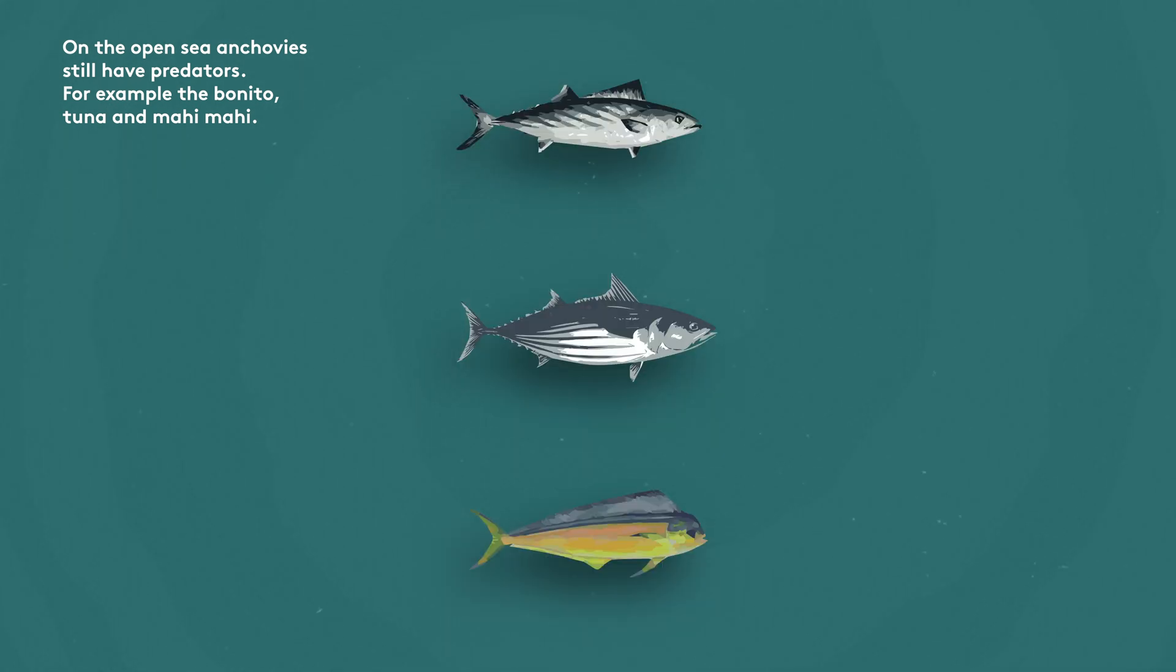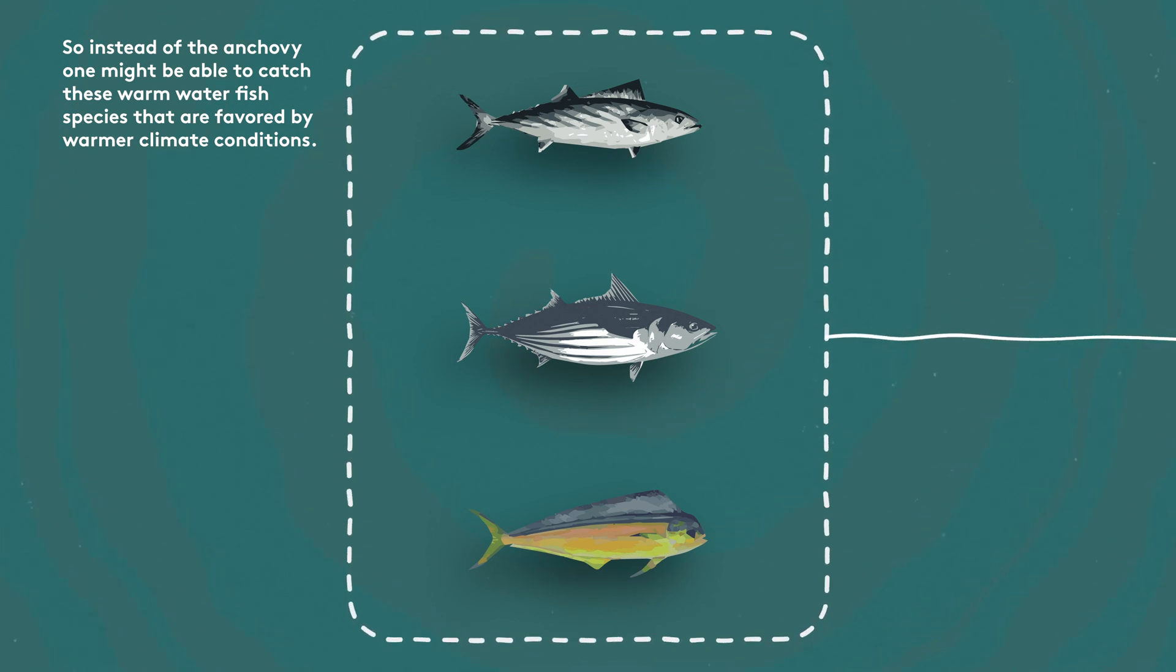On the open sea, anchovies still have predators, for example the bonito, the tuna and the mahi-mahi. So instead of the anchovies, one might be able to catch these warm water fish species that are favored by warmer climate conditions.